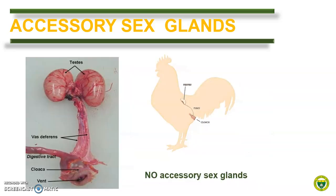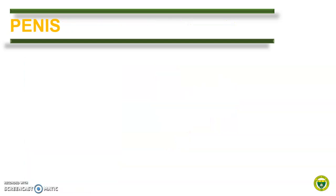It is also important to note that male birds do not possess accessory sex glands. Their ejaculate is composed of sperm and scant additional secretions produced by the testes and the walls of the ducts.